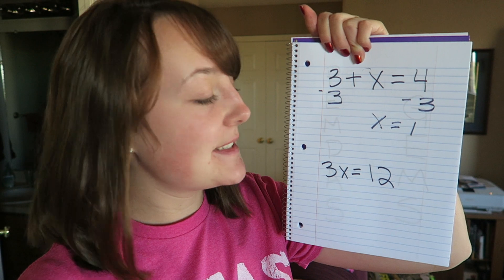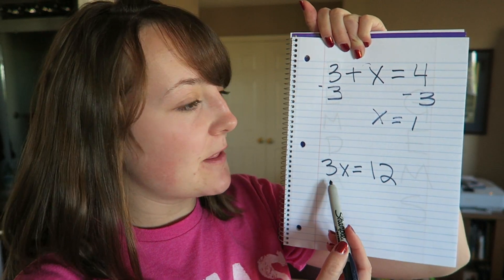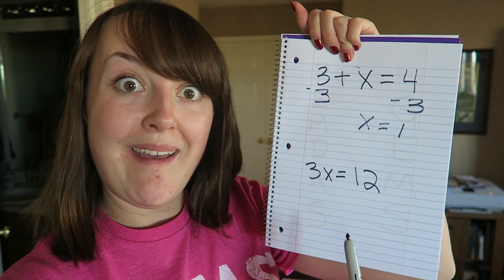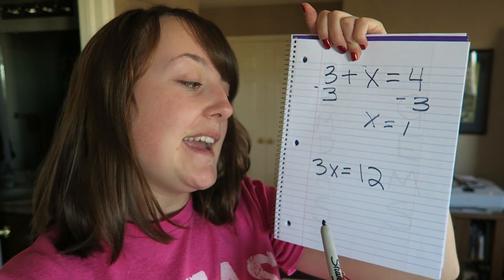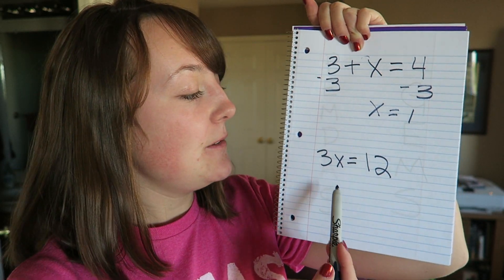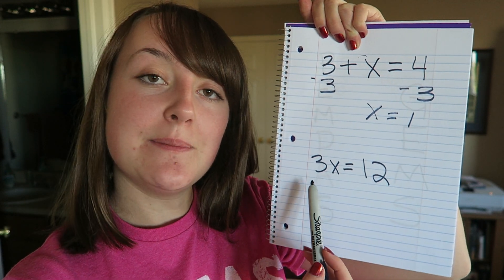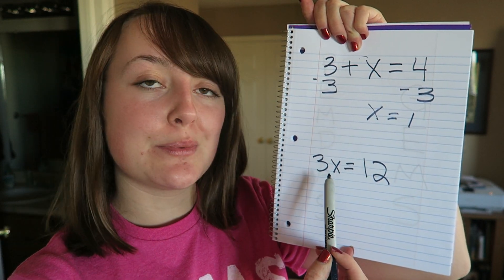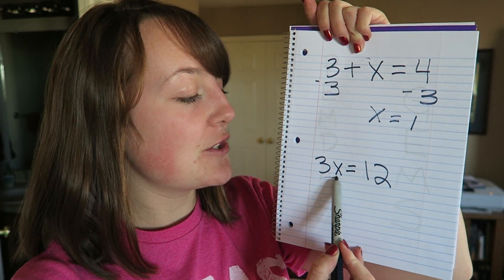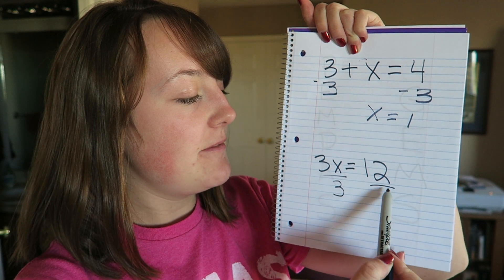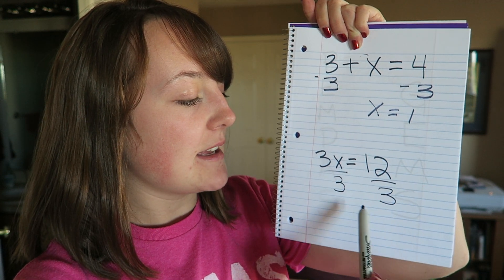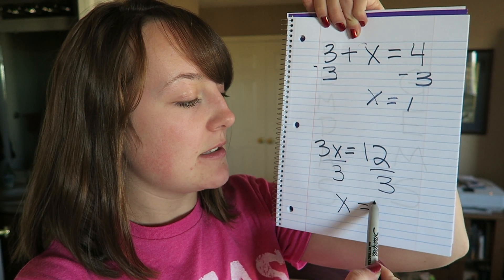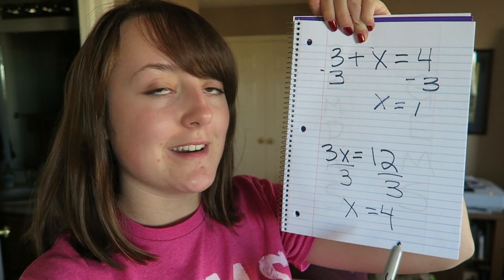Now in Example 2, the 3 and the X are right next to each other — and I'm here to tell you that means it's multiplying. 3 and X together means multiplication. So what you're gonna do is divide by 3 on both sides. Divide by 3, and X is equal to 4.